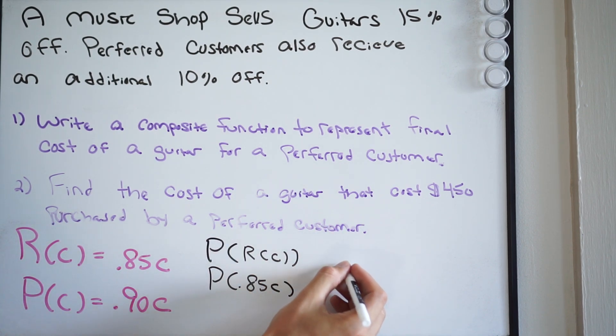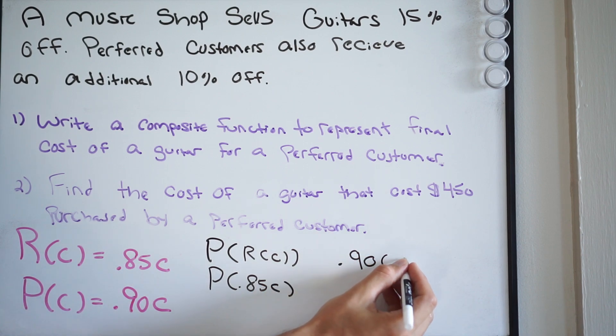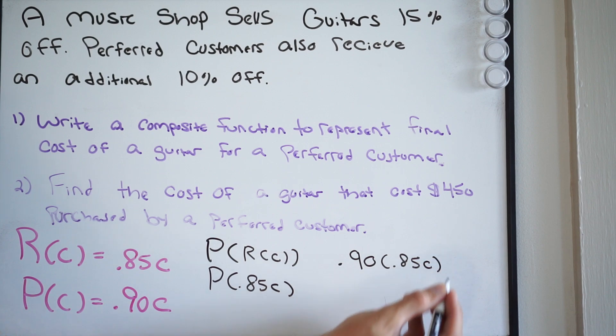So I'm going to have 0.90. Now here's my C. So I'm going to go ahead and plug this guy in. 0.85C.